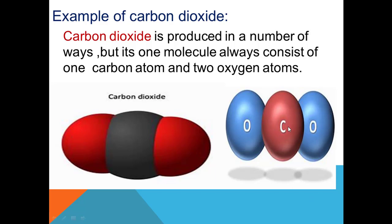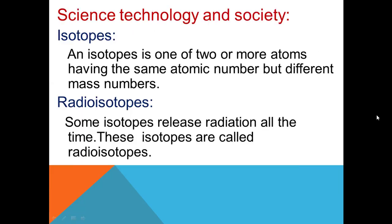When one carbon atom and two oxygen atoms combine, carbon dioxide formation takes place. So that was all about the law of constant composition. Let's move towards the science, technology and society section.